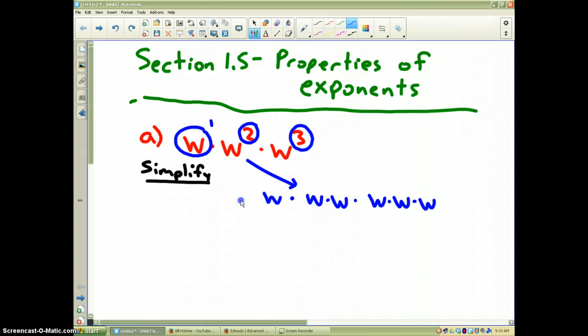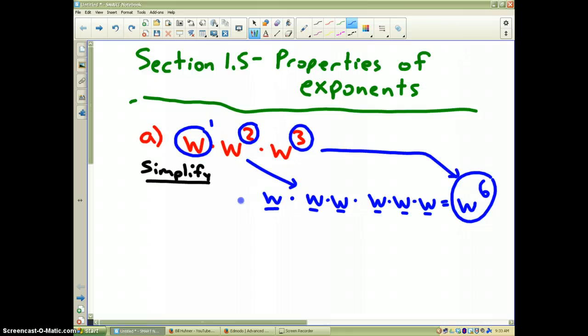What do I have? All together, I have 1, 2, 3, 4, 5, 6 w's that I'm multiplying together. So therefore, this particular problem simplifies to w to the sixth. Now the question is, what did I do with the powers? If this is a 1, and this is a 2, and this is a 3, when you multiply the same variables together, very simply add the powers.